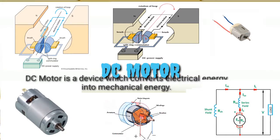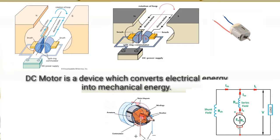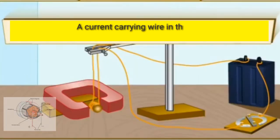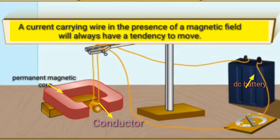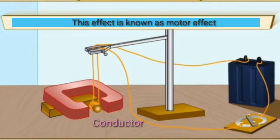A device which converts electrical energy into mechanical energy. A current carrying wire in the presence of a magnetic field will always have a tendency to move. This effect is known as motor effect.